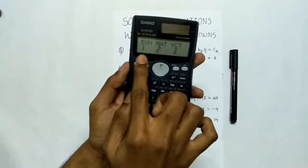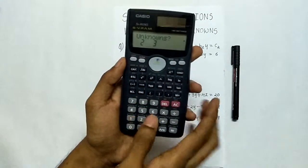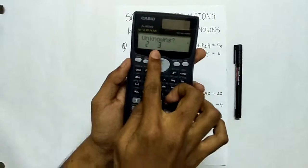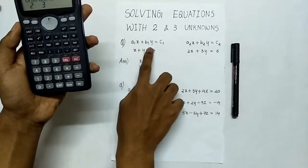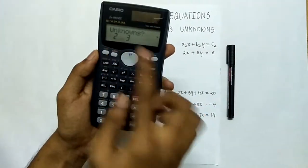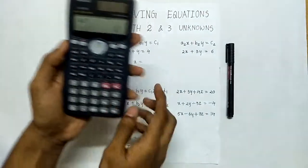Select eqn means equation. Here it is showing unknowns. First question we have x and y as unknowns, so press 2 to find the 2 unknowns.